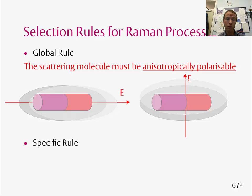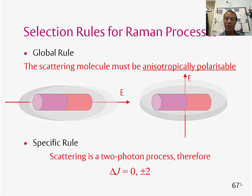The specific selection rule for this, as scattering can be seen as a two-photon process, we have delta J is equal to zero or plus or minus two. Have a think about where these delta J values come from.